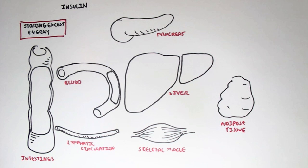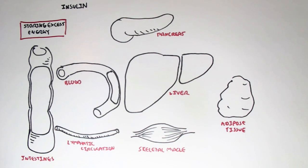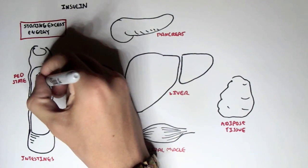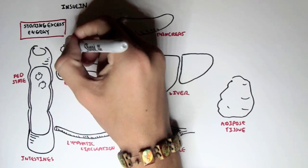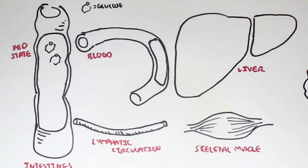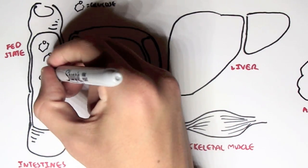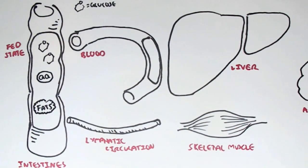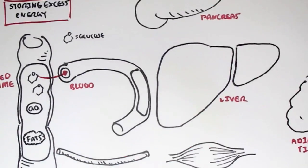Insulin has a major effect during the fed state — basically just after we eat — because after we eat we would have many macromolecules running through our intestines, such as glucose, amino acids, and fats. Let's concentrate on glucose first.